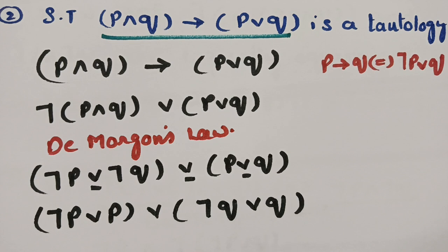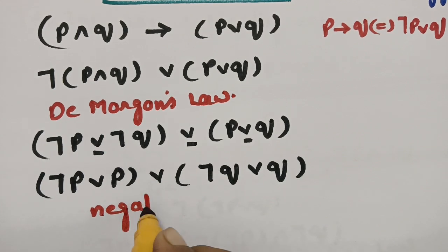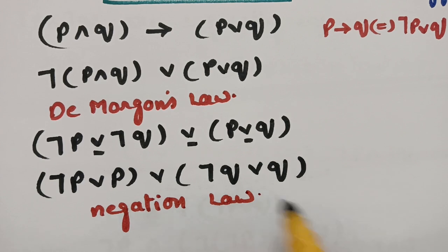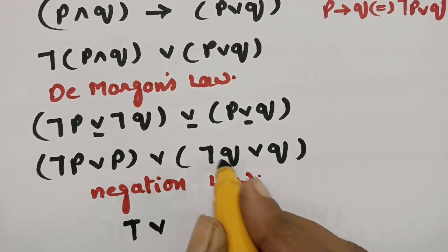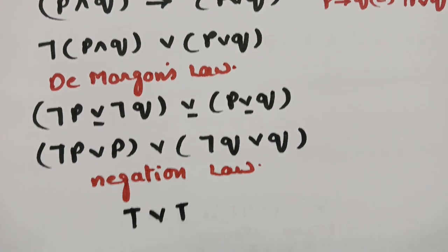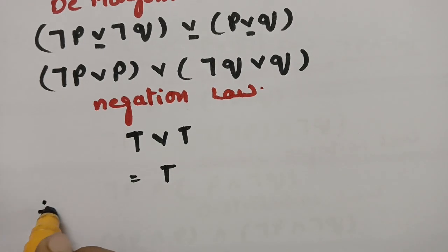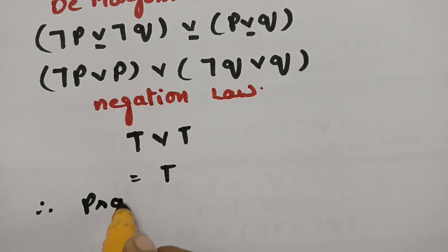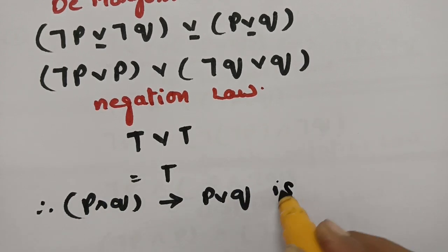Now applying the negation law: negation P or P is true, and negation Q or Q is also true. So we have true or true, which equals true. Therefore, (P and Q) implies (P or Q) is a tautology.